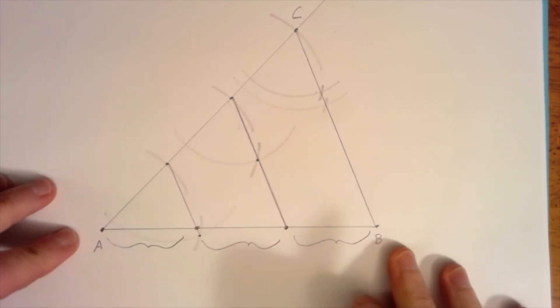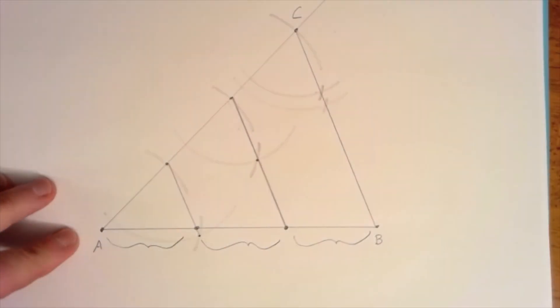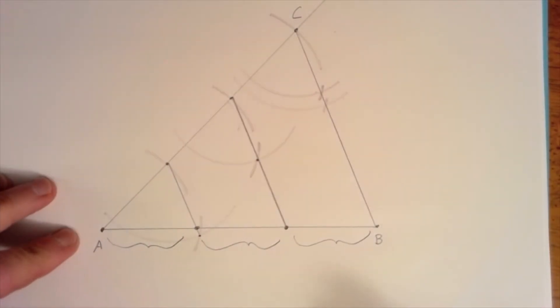And again if we want to make this into five sections then we would make five markings here. Do the same thing and repeat the parallel line construction five times. And so that is how to dissect a line into as many pieces as you would like.